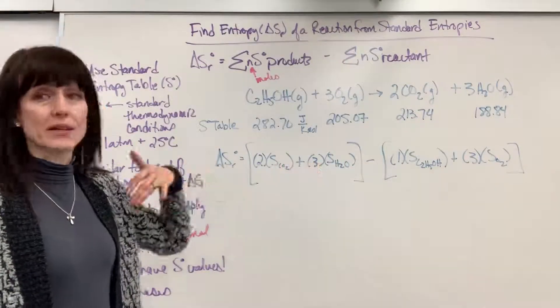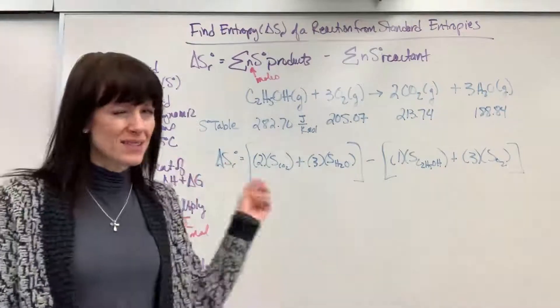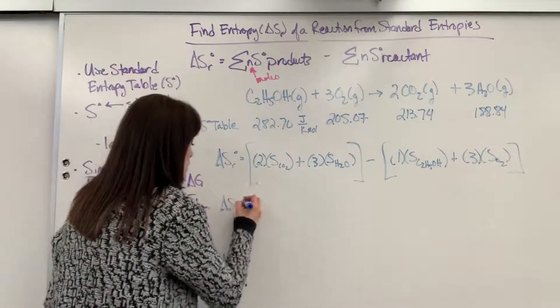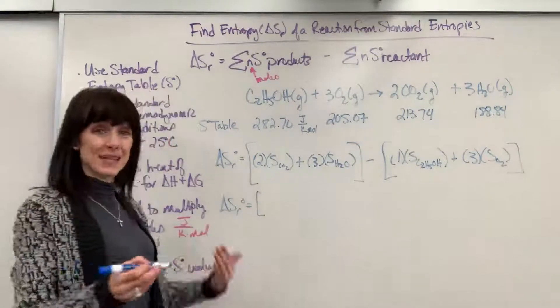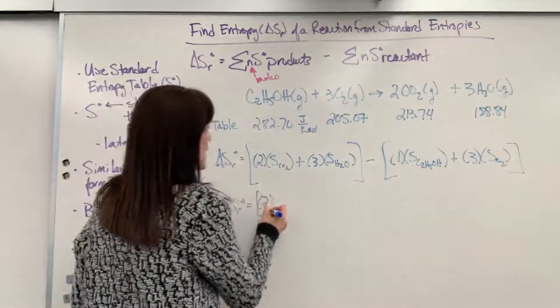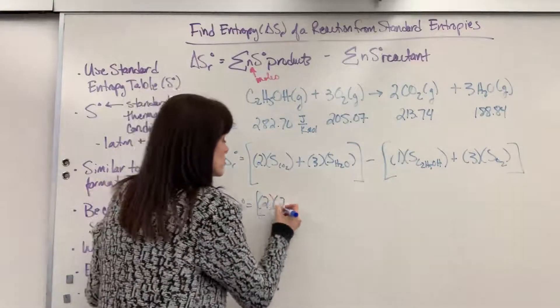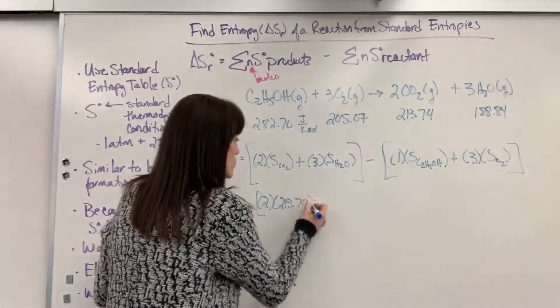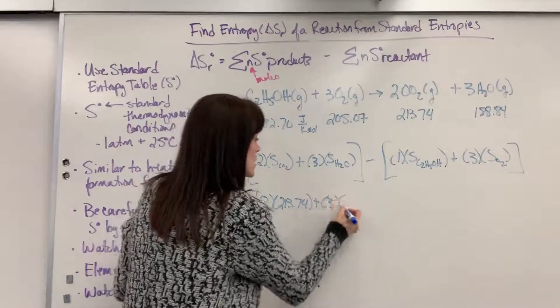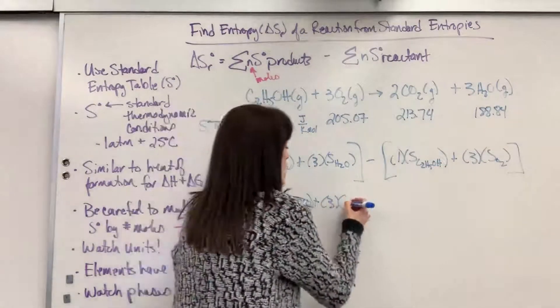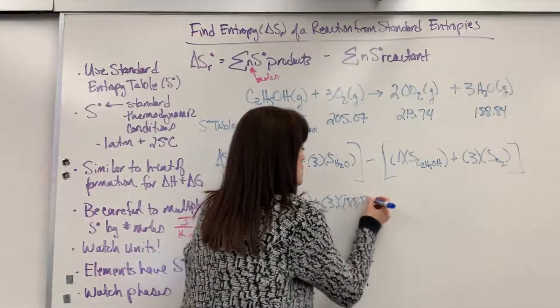So let's go ahead and plug in numbers. Again, if you want to write it out symbolically, you can, but once you get used to this, that step you could skip. Okay, so change in entropy for a reaction equals, let's go ahead and substitute in numbers. We're going to have, again, our two moles of CO2, entropy of CO2, which is 213.74, plus three moles times the entropy of water in the gas space, 188.84.